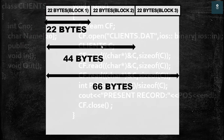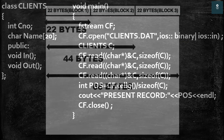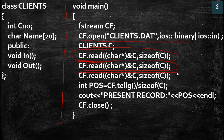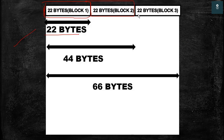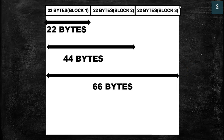After this the second object is read, therefore the next 22 bytes are read. Then in the third statement we are reading the third object of the file, so another 22 bytes are read. This means after this statement a total of 66 bytes are read from the 'clients.dat' file. This means that the current location of our get pointer is at the 66th location.